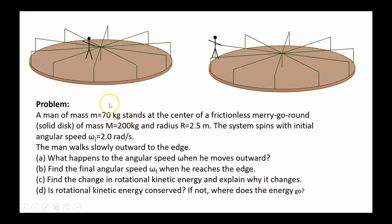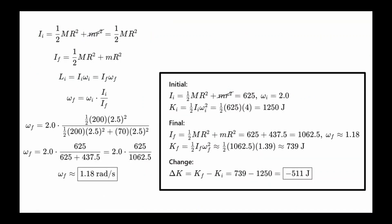Problem 3: A man of mass 70 kilograms stands at the center of a frictionless merry-go-round of mass 200 kilograms and radius 2.5 meters. The system spins with an initial angular speed of 2 radians per second. The man walks slowly outward to the edge. What happens to the angular speed when he moves outward? Find the final angular speed omega-f when he reaches the edge, and find the change in rotational kinetic energy. To solve this, we use conservation of angular momentum. The initial moment of inertia is the moment of inertia of the merry-go-round plus the moment of inertia of the man when standing at the center.